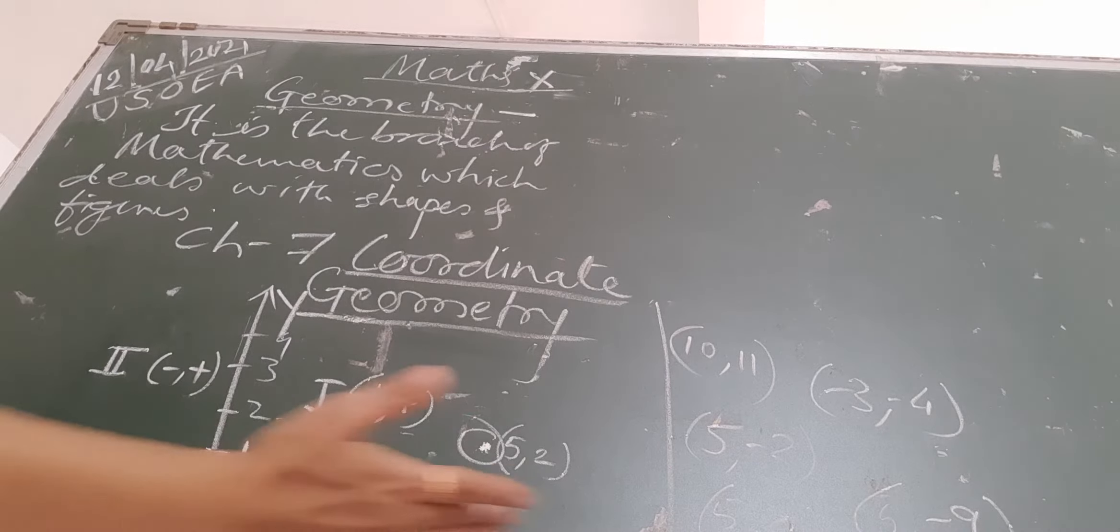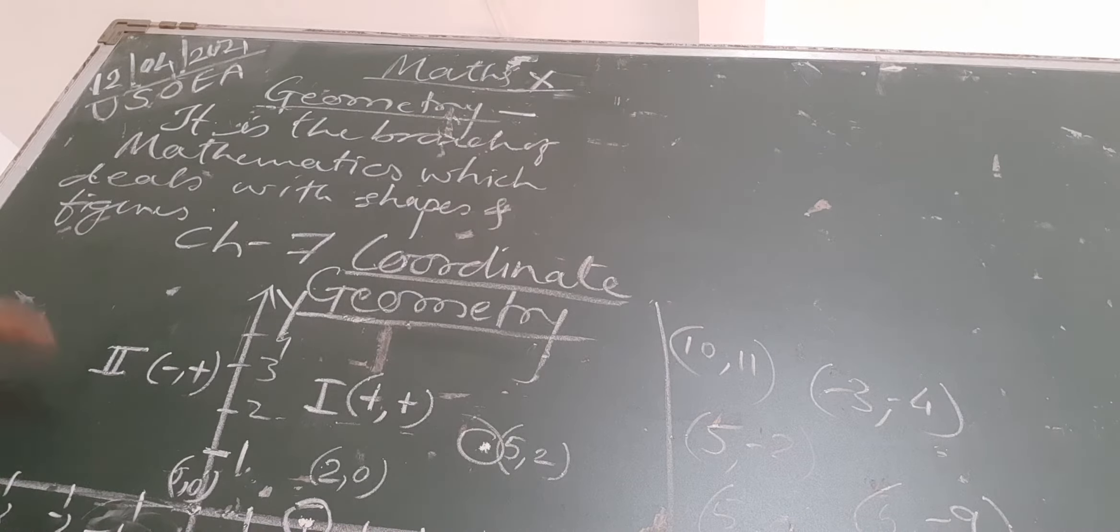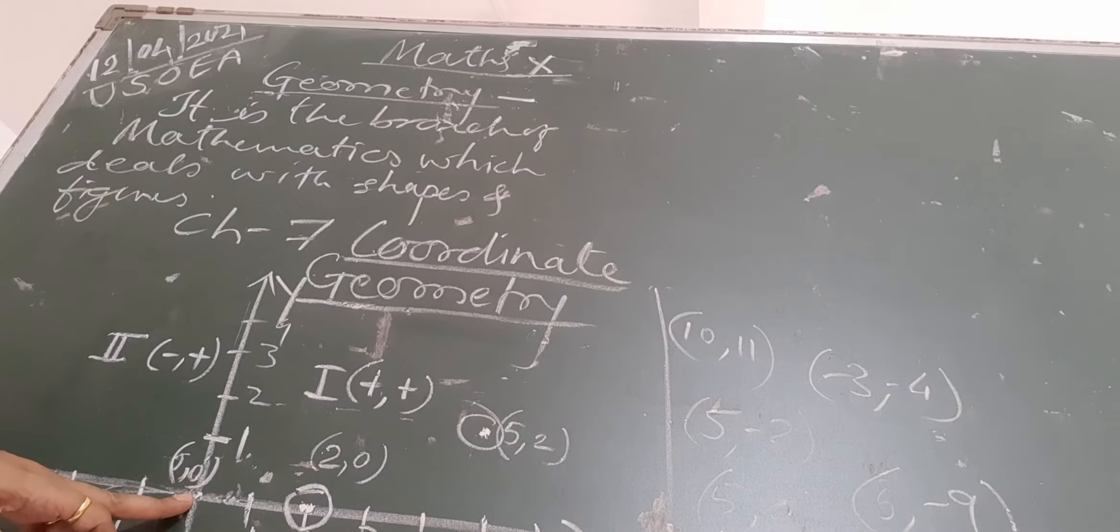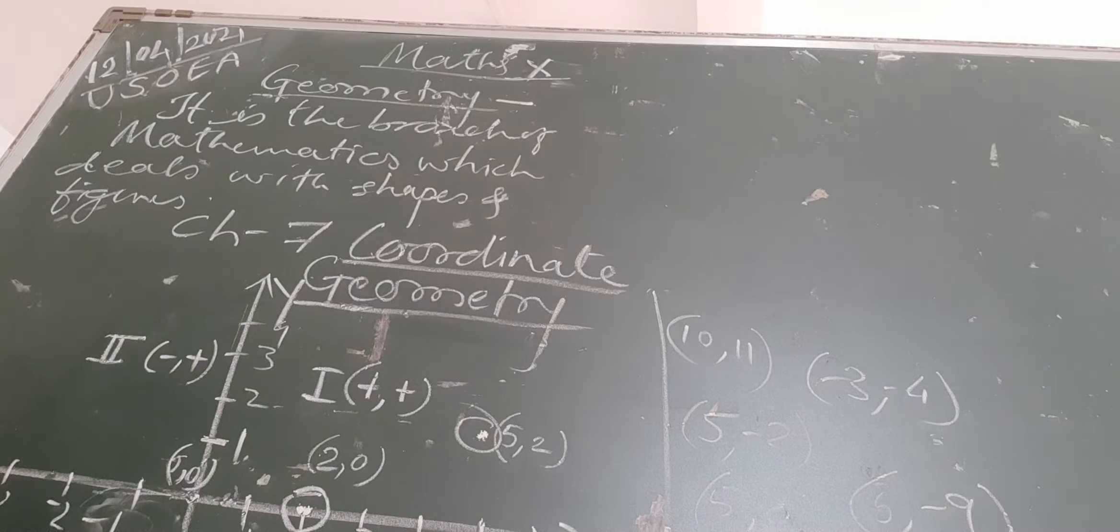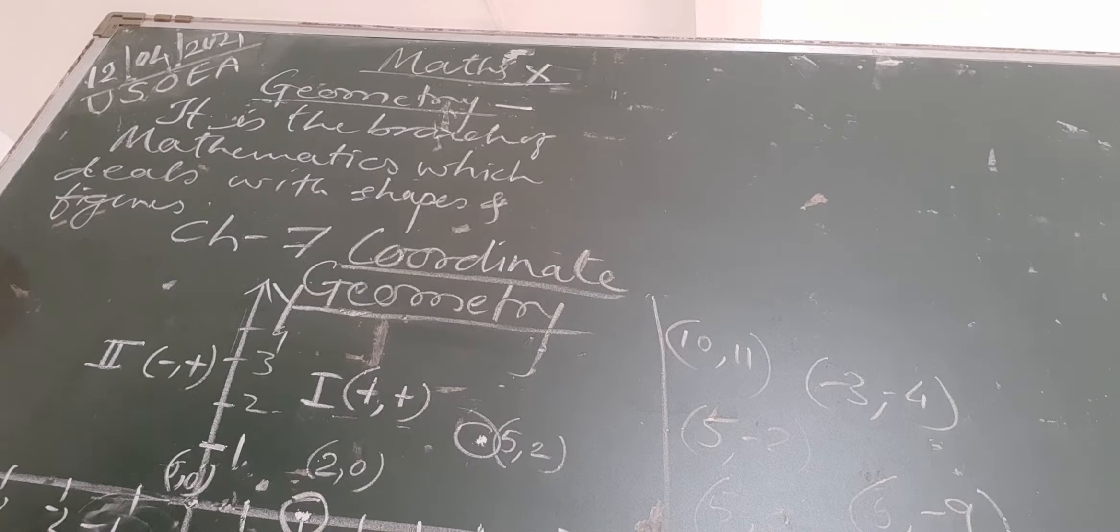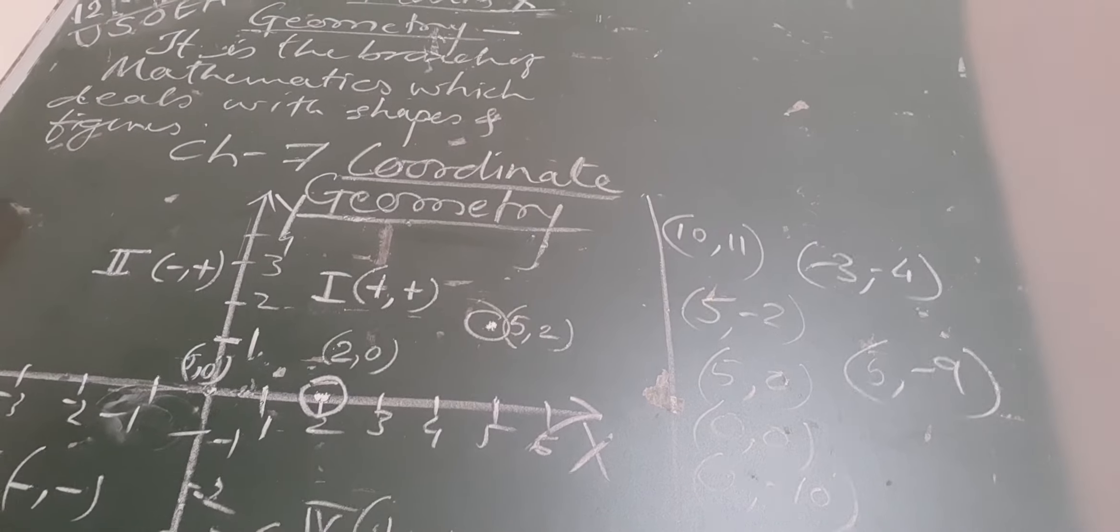We can see that the axes are intersecting each other at a point. Because of the intersection, this plane gets divided into four parts. Each part is called a quadrant.